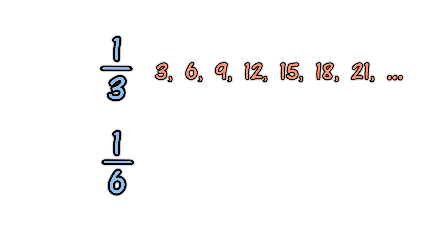For one-third, we'll list the multiples of three. Three, six, nine, twelve, fifteen, eighteen, twenty-one, and so on. For one-sixth, list the multiples of six. Six, twelve, eighteen, and twenty-four. Then find the smallest number that's the same.